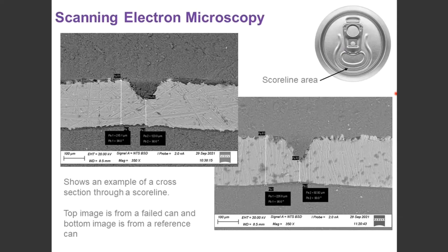We can then add our measurements to take a look at the residual metal and the scoreline depth. We can do it as a comparison, so against failing cans, against non-failed cans, in the same batches, between batches, or it could also be used for compliance if you have a specification available.